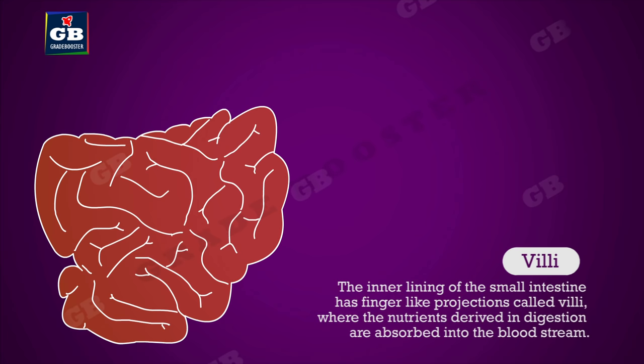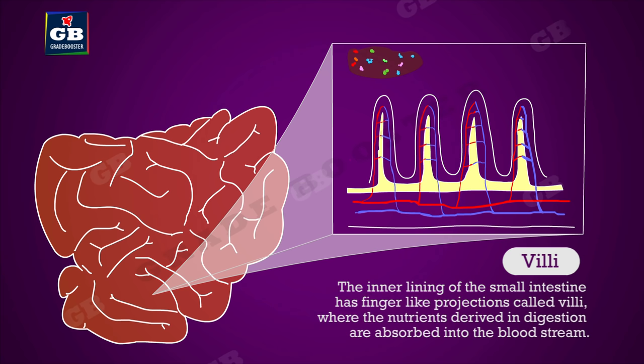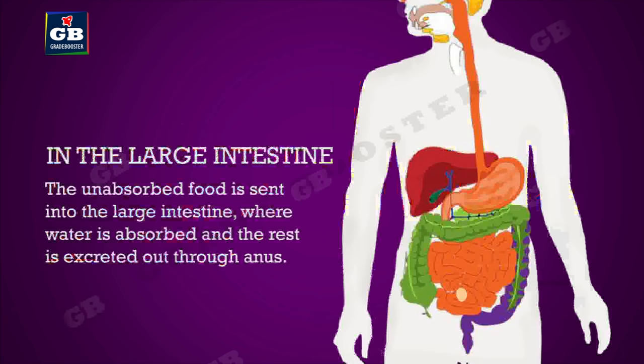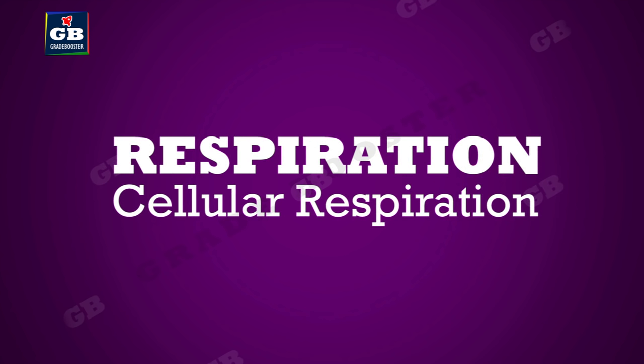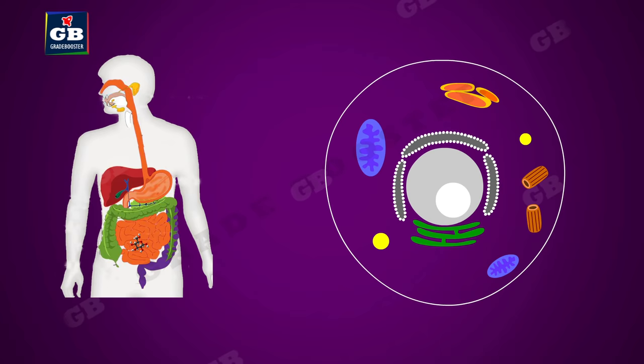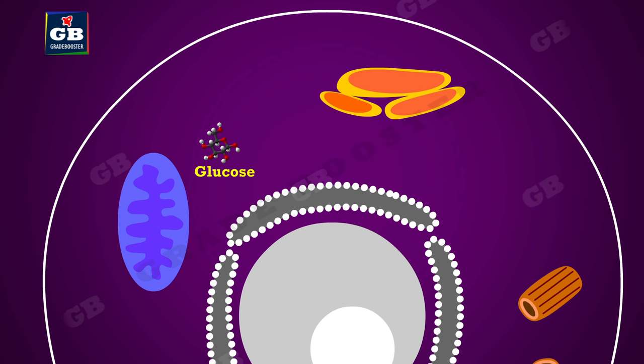The inner lining of the small intestine has finger-like projections called villi, where nutrients derived from digestion are absorbed into the bloodstream. The unabsorbed food is sent into the large intestine, where water is absorbed, and the rest is excreted out through the anus.